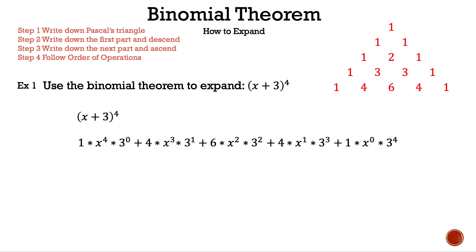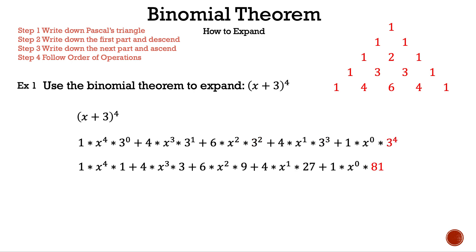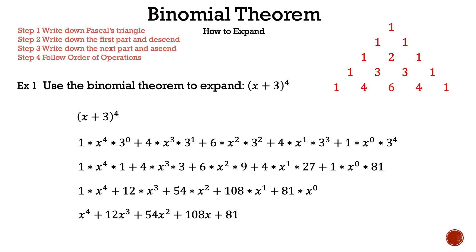And that's how you use Pascal's triangle and the binomial theorem to expand binomials. Now let's simplify any numbers with powers: 3 to the 0 is 1, 3 to the 1st is 3, 3 squared is 9, 3 cubed is 27, and 3 to the 4th is 81. Now let's multiply the integers together: 1 times 1 is 1, 4 times 3 is 12, 6 times 9 is 54, 4 times 27 is 108, and 1 times 81 is 81. Getting rid of the extra terms and remembering x to the 0 is 1, we get x to the 4th plus 12x cubed plus 54x squared plus 108x plus 81. That is the expansion. If you don't remember it, you can do it the old-fashioned way and distribute x plus 3 four times.